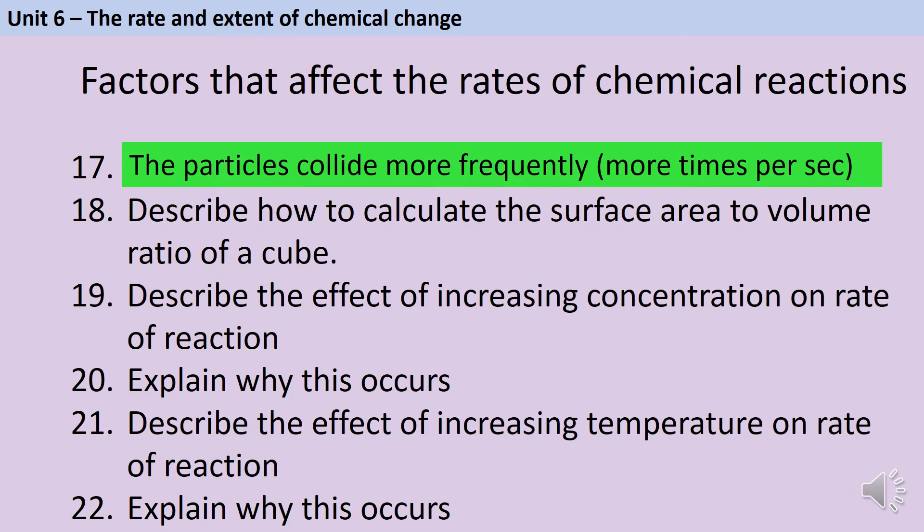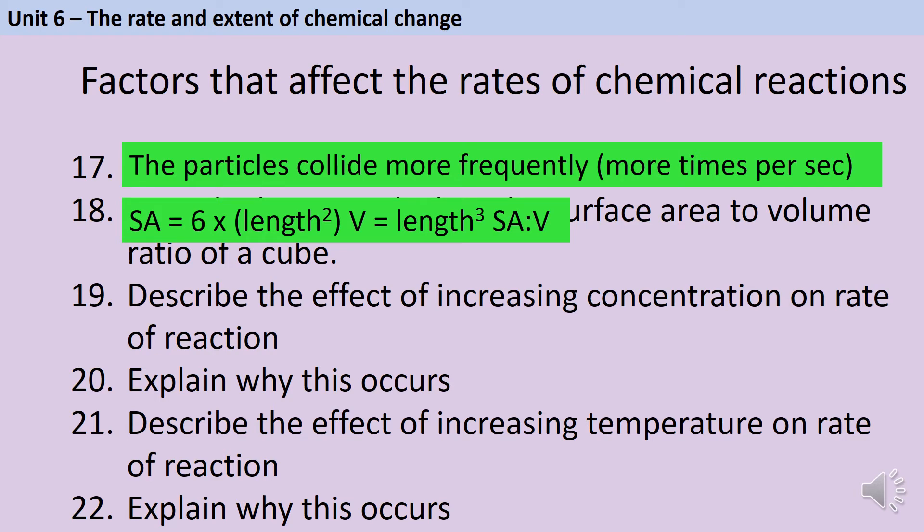To calculate the surface area to volume ratio, we need the surface area and the volume. If you think about a cube, it has six sides and the edges of each side are the same length. To work out the surface area, we work out the area of one side, the length times the length or the length squared, and then multiply that by six. To work out the volume of a cube, you take that length and cube it. Then we can work out the surface area to volume ratio by putting them together in a ratio or just dividing the surface area by the volume.